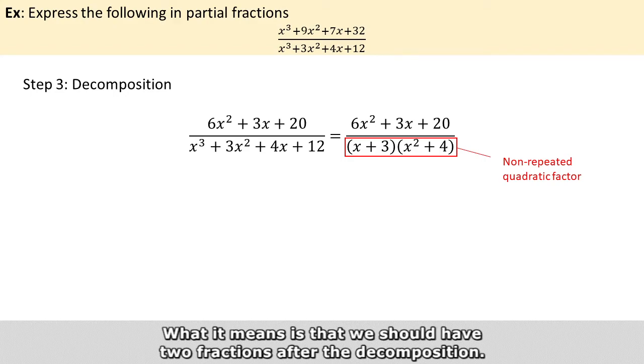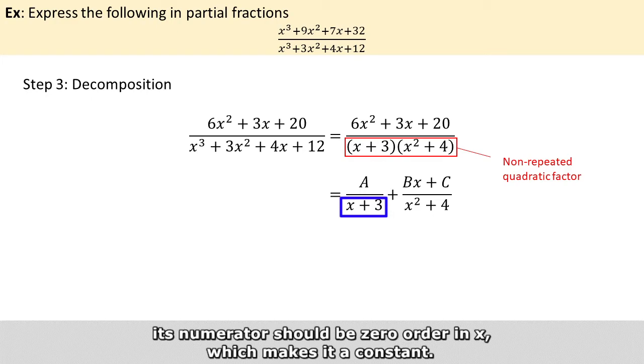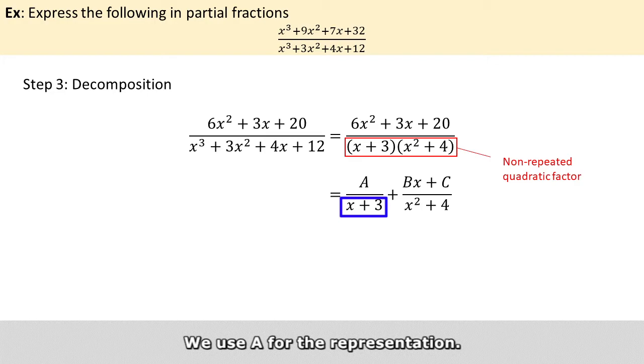What it means is that we should have two fractions after the decomposition. So because x + 3 is up to the first order in x, its numerator should be zero order in x, which makes it just a number or constant. We use A for the representation.